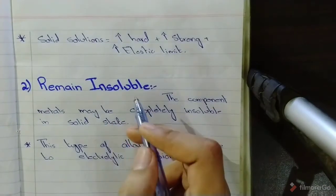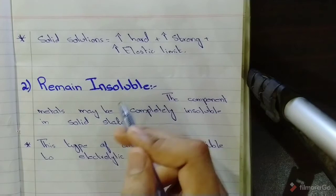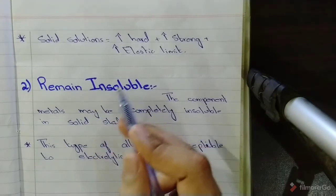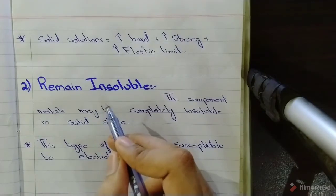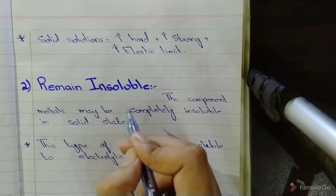As I mentioned earlier, when you melt two alloys and mix them together, one of four things happens. The first thing I mentioned earlier. The second thing is that these metals may remain insoluble - the component metals may be completely insoluble in the solid state.